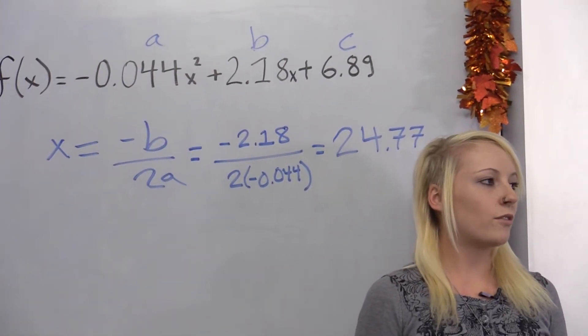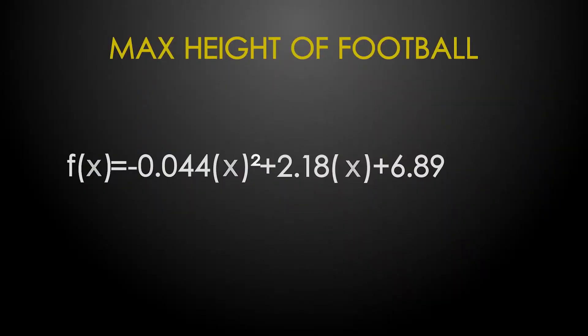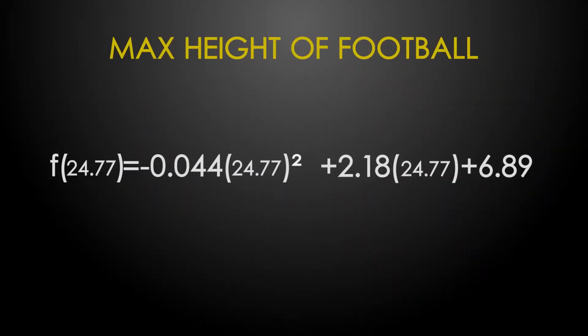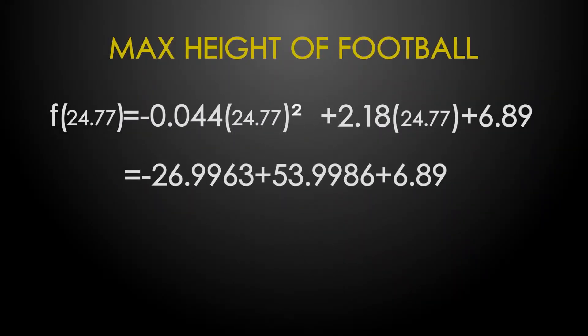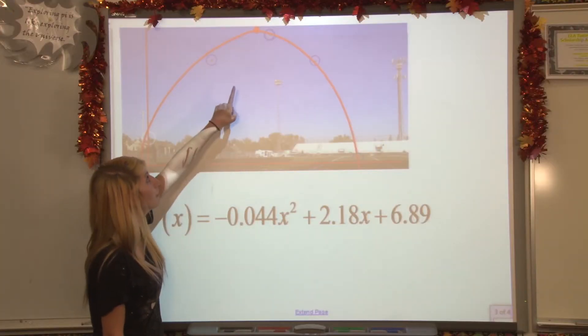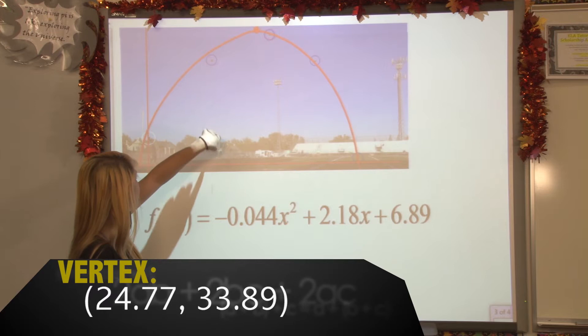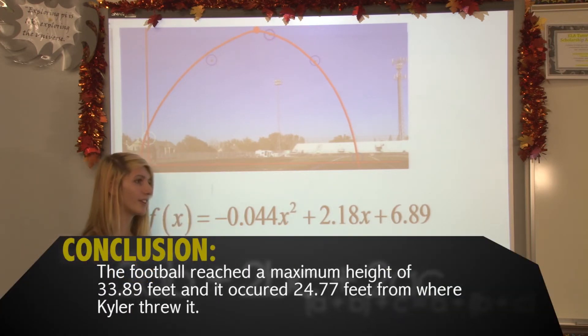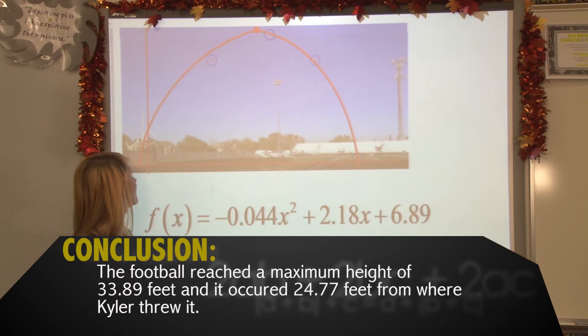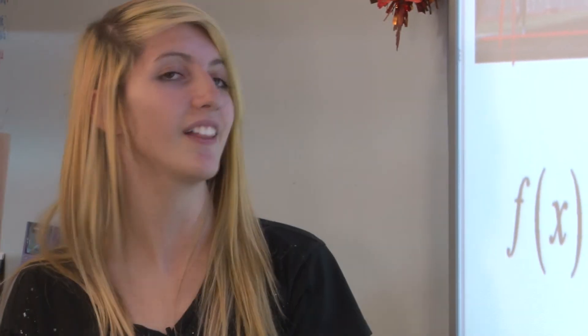Now we evaluate the function at 24.77 feet to find the maximum height that the football went during the throw, which equals 33.89. This means that our vertex has an x value of 24.77 and a y value of 33.89, so our max height of 33.89 feet occurred 24.77 feet from where Kyle made the throw.